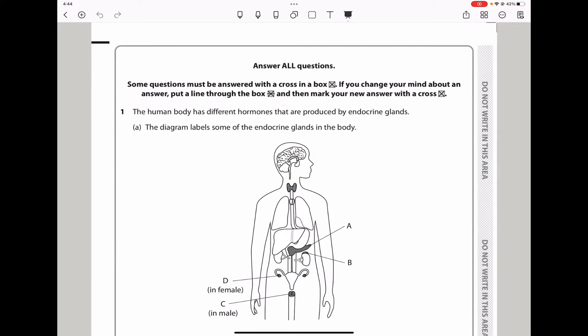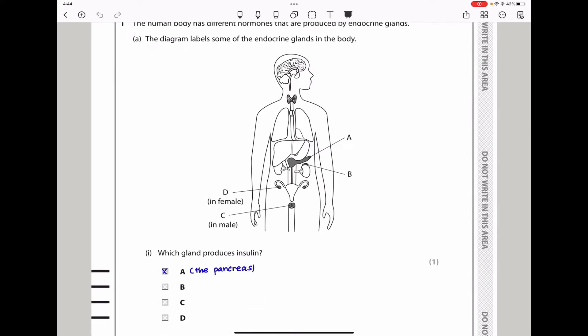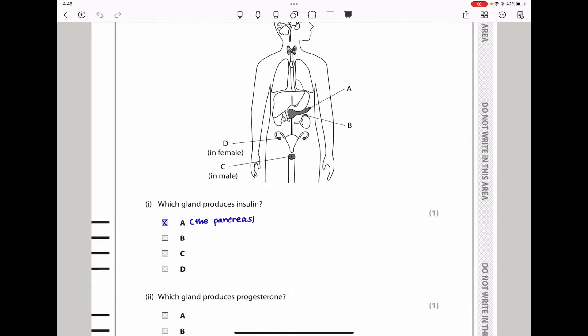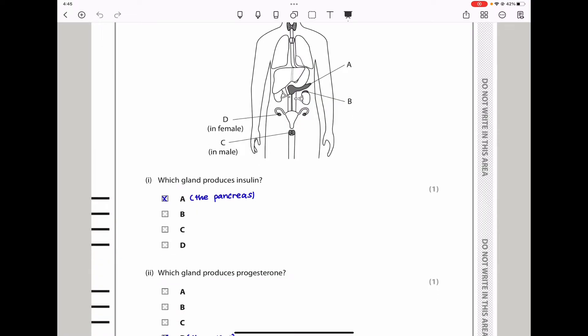The human body has different hormones that are produced by endocrine glands. The diagram labels some of the endocrine glands in the body - the pancreas, the adrenal gland, the ovary, and the testis. Which gland produces insulin? Insulin is a hormone produced by the pancreas. The answer here should be A, the pancreas.